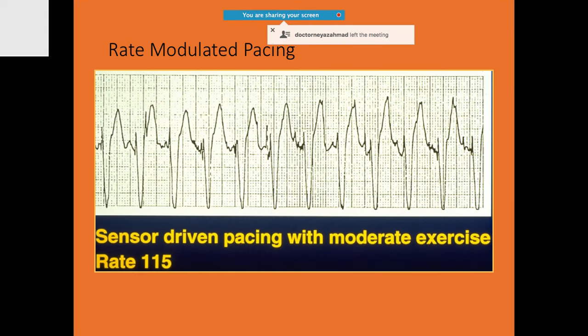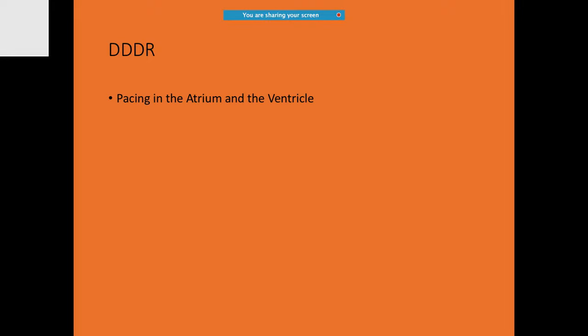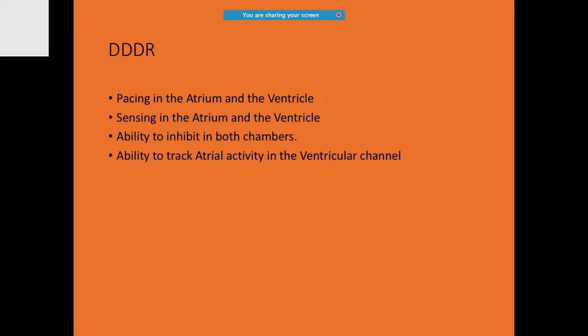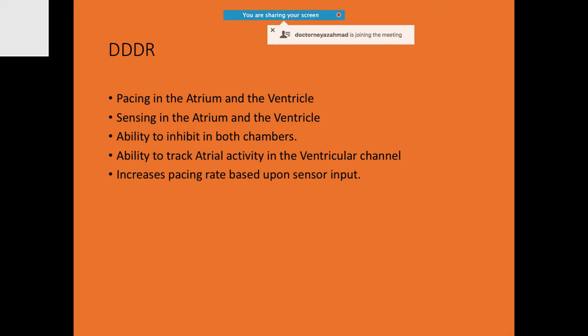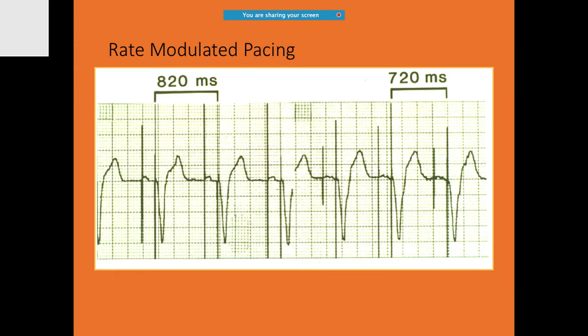Rate-modulated pacing is sensor-driven pacing: with moderate exercise, the rate increases further. DDDR: pacing in atrium and ventricle, sensing in both chambers, able to inhibit in both atrium and ventricle, can track atrial activity in the ventricular channel, and increases pacing rate based on sensor input.